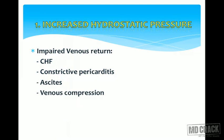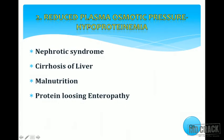Causes of increased hydrostatic pressure include impaired venous drainage due to congestive heart failure, constrictive pericarditis, massive ascites, and venous compression by tumors or retroperitoneal fibrosis. Causes of reduced plasma oncotic pressure are mainly hypoproteinemia — low serum albumin — seen in nephrotic syndrome (with massive proteinuria >3.5g/day), liver cirrhosis (impaired albumin synthesis), malnutrition such as marasmus and kwashiorkor, and protein-losing enteropathy.